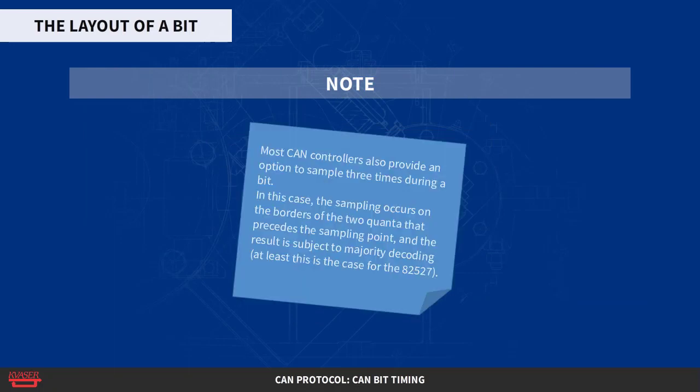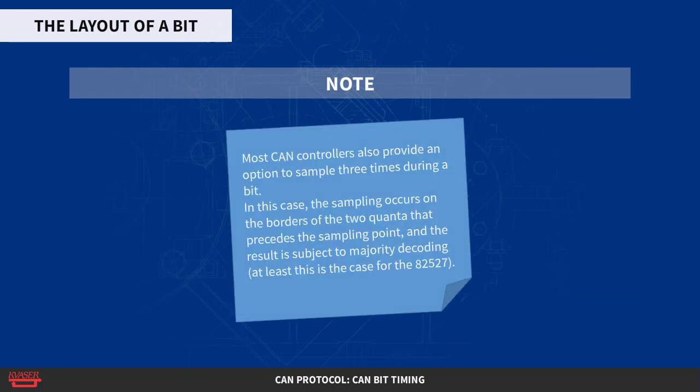Most CAN controllers also provide an option to sample three times during a bit. In this case, the sampling occurs on the borders of the two quanta that precede the sampling point, and the result is subject to majority decoding. At least this is the case for the 82527.